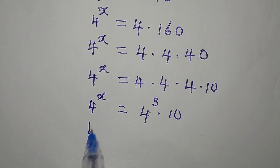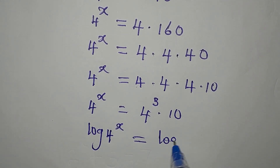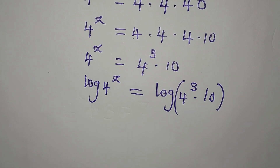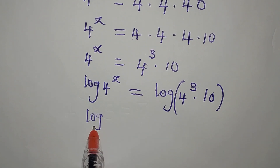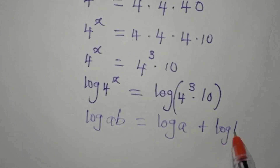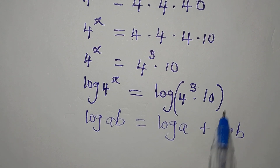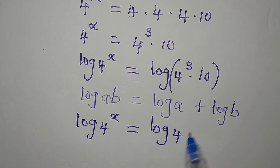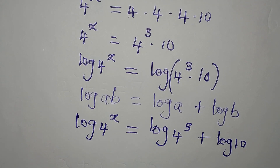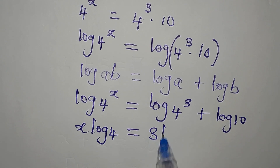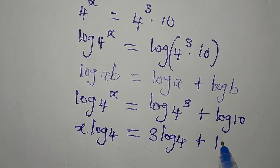So we have to take the log of both sides. Log 4 to the power of x will now be equal to log of 4 to the power of 3 times 10. We'll now use one of the laws of logarithms that says log of a times b is the same as log a plus log b. So I will write this as: log 4 to the power of x equals log 4 to the power of 3 plus log 10.